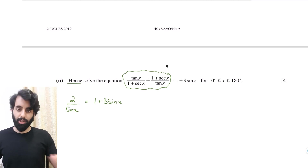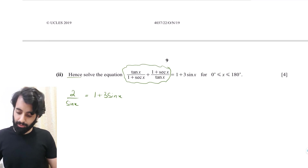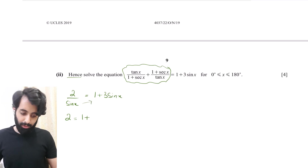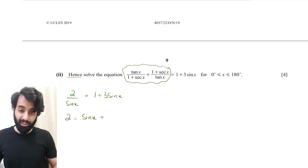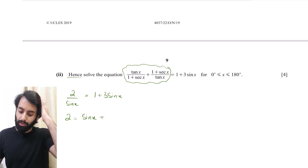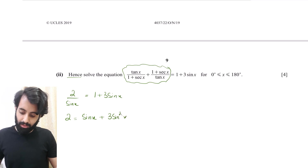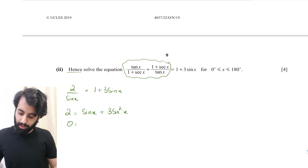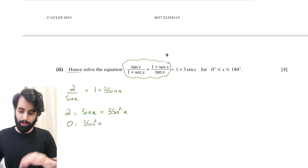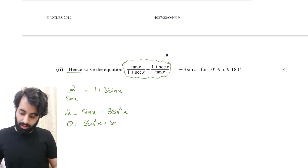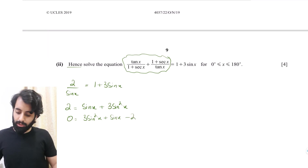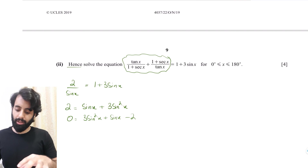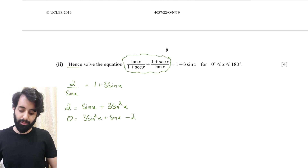So we need to solve 2/sin x = 1 + 3 sin x. Cross-multiplying: 2 = sin x + 3 sin²x. Shifting everything to one side gives 0 = 3 sin²x + sin x − 2. This is a disguised quadratic equation — it has a sin²x term, a sin x term, and a constant, just like ax² + bx + c = 0.